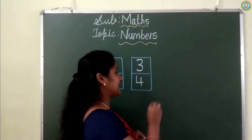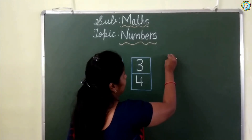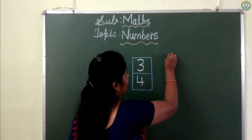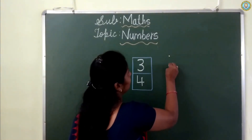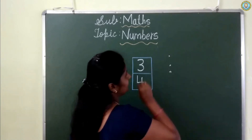If you want to write number 4, go to the table: 1, 2, 3.